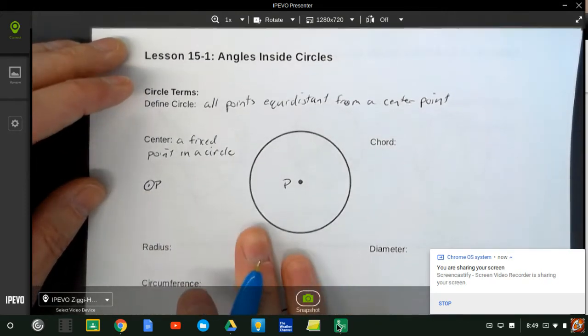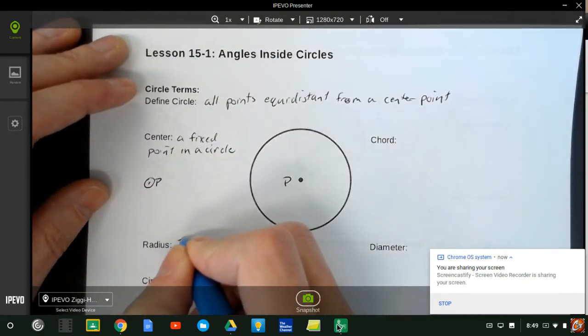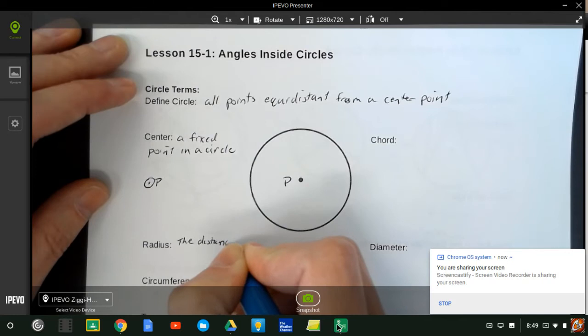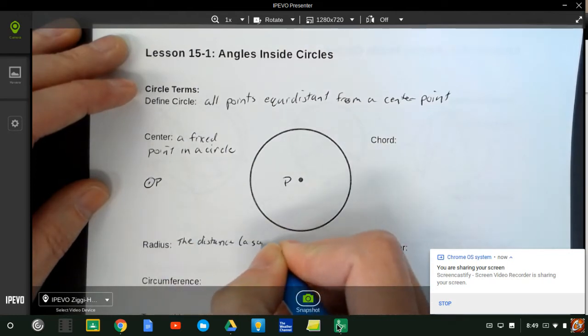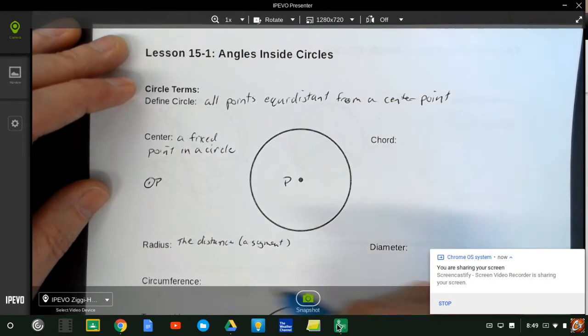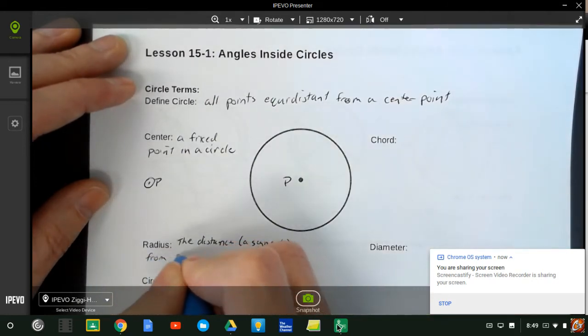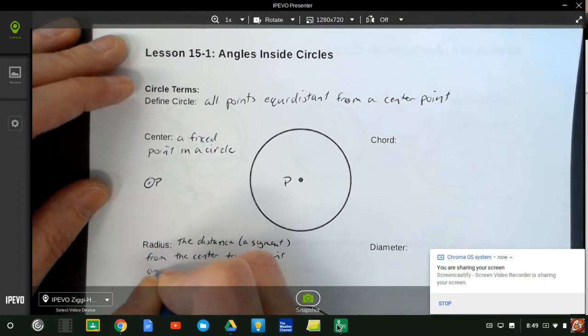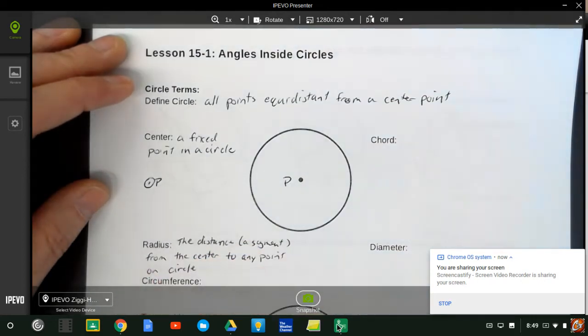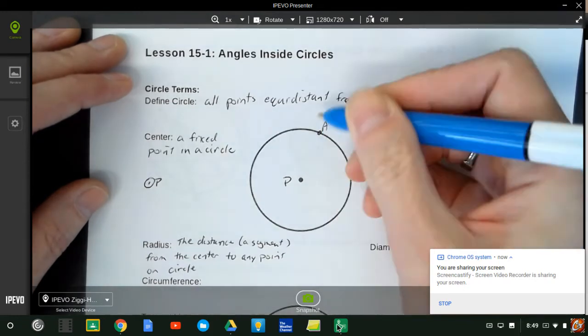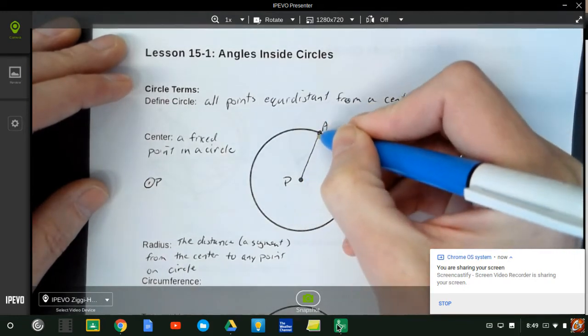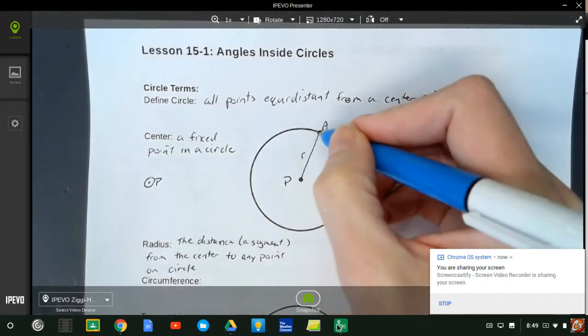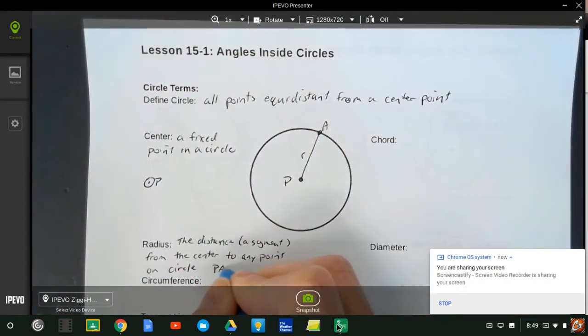We already discussed what the radius of a circle is. A radius is the distance, or you could say it's a segment, depending on how you're defining it at the time, from the center of the circle to any point on the circle. So if I put any old point on the circle, point A here, my radius goes from the center to that point. So this distance is a radius, or the segment itself is a radius. So the segment PA, notice I use my segment symbol, is an example of the radius.